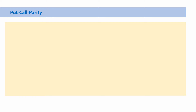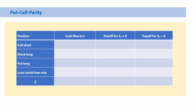So let's start with the non-arbitrage table in the way that we already used so often. We will combine a call short, a stock long, buying a put, and taking a loan at the risk-free rate. We will put these four financial instruments together and now check out what the cash flow is at any given time T, and what the payoff is if the stock price at expiration is below or above the exercise price.